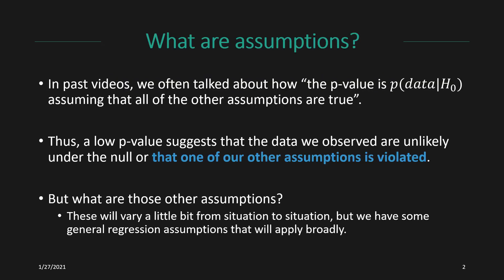What do we mean when we talk about regression assumptions? In the past videos, I've often said the p-value is the probability of observing data at this extreme or more extreme, assuming that the null hypothesis is true, and assuming that all of the other assumptions are true. A low p-value suggests that the data we observe are unlikely under the null if all of those assumptions hold. Another reason we could get a low p-value is that one of our other assumptions is violated. So, to make sure that we're interpreting that low p-value correctly and that we really are rejecting the null hypothesis when we should be, it's important that we check our other regression assumptions to make sure that they are at least approximately true.